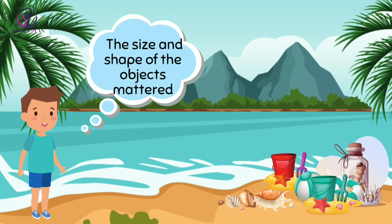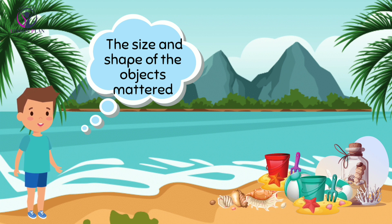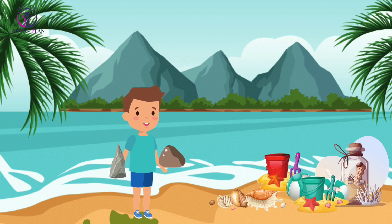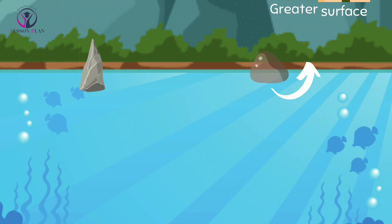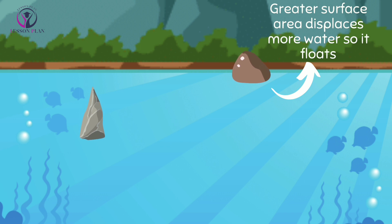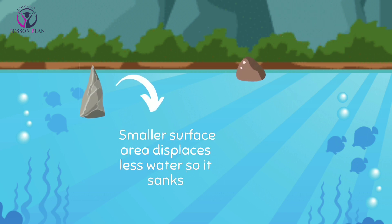Ali selected two small pebbles that seemed identical in weight but different in size and shape. He dropped both pebbles and observed. To his surprise, the pebble with the greater surface area floated. He realized that an object will float if it displaces an amount of water equal to its own weight. The pebble that floated had a greater volume and therefore displaced more water than the pebble that sank, even though they had the same weight. The pebble smaller in shape sank straight to the bottom because it displaced less water.